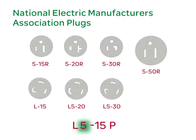The first number can be a digit between 1 and 24, where 3 and 4 are never used. That number represents a certain combination of voltage, number of poles, number of wires, and whether it is a grounding type plug or not. In this example, the plug is a number 5 plug. The number after the hyphen indicates the amperage rating — in this example, 15, which means the plug is rated to handle 15 amps. The final letter P indicates that the device is indeed a plug. If the device was a receptacle, the final letter would be an R.